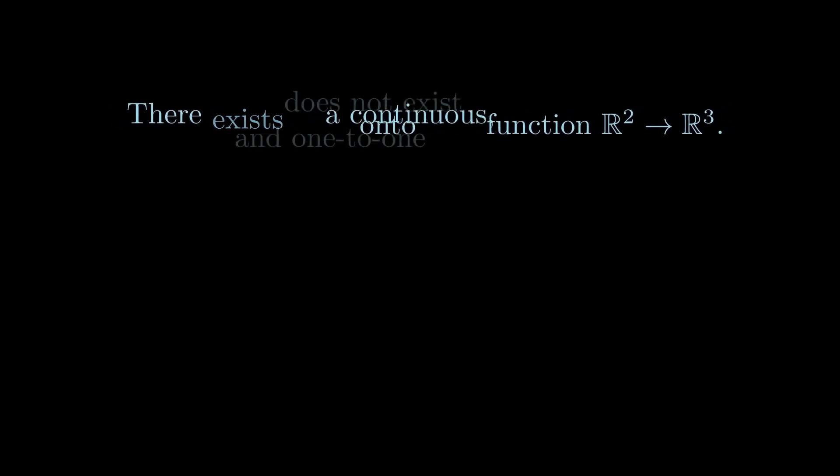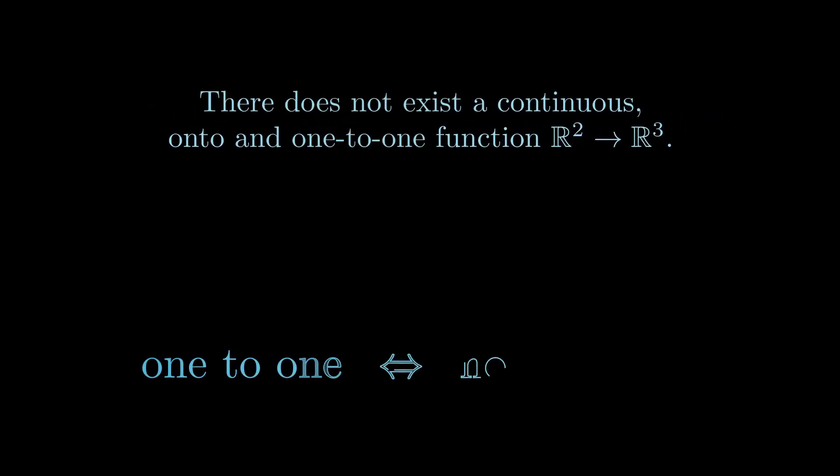So we've done it. We have a continuous function that's onto from 2D to 3D. But what is even more interesting is the fact that there does not exist a continuous function from 2D to 3D that is both one-to-one and onto.